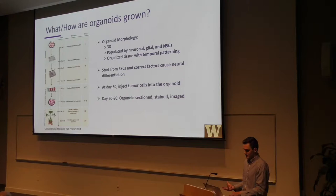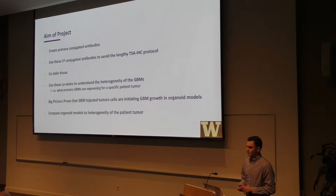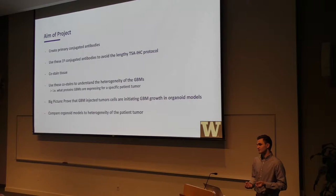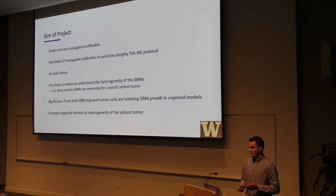The aim of my project was to work on doing co-stains on tissue. The way we did this was — I was given unconjugated primary antibodies, and my goal was to conjugate these antibodies with different fluorescent dyes to then co-stain this tissue and use these co-stains to understand the heterogeneity of glioblastomas. The big picture is basically to prove that the cells we are injecting into these organoids are leading to GBM-like growth and modeling the tumor seen in the patient.